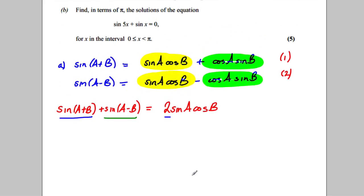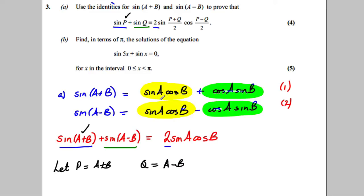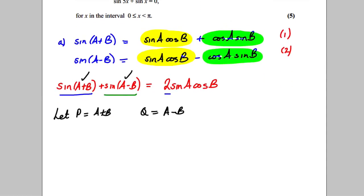At this point, if I just define — there's no harm in doing this — let P equal A plus B and Q equal A minus B. Then we would get sine(P) plus sine(Q) is equal to two sine(A) cosine(B).